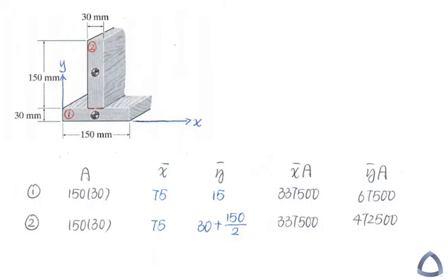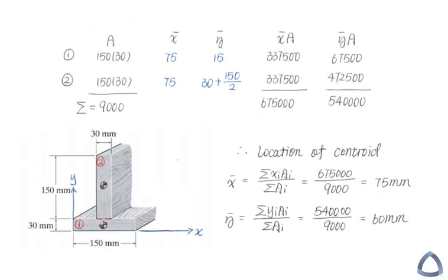So the system centroid for this composite area based on the equation here will be the total number from this column divided by the total area. So after you got all these values, I highly recommend you to do one more thing.